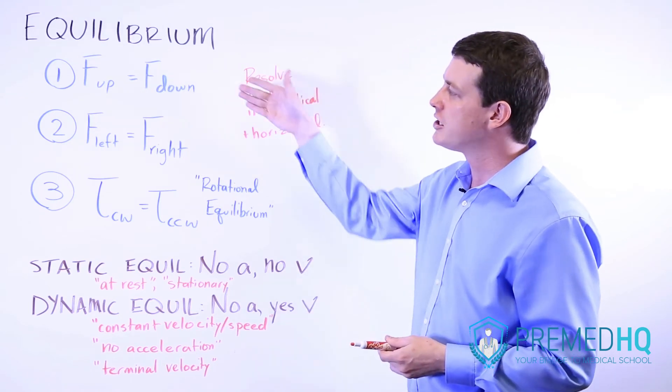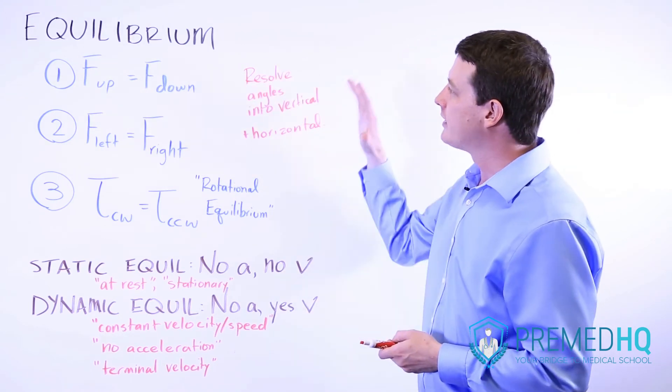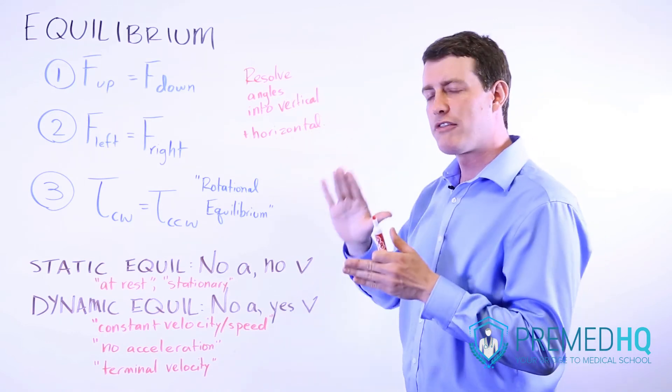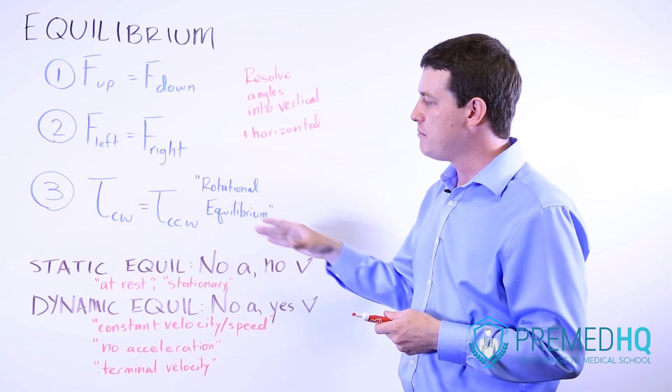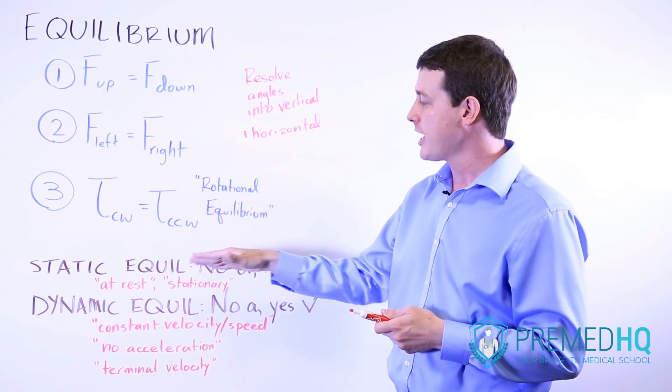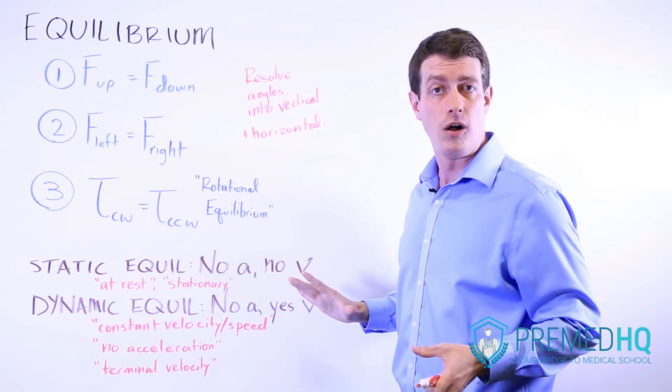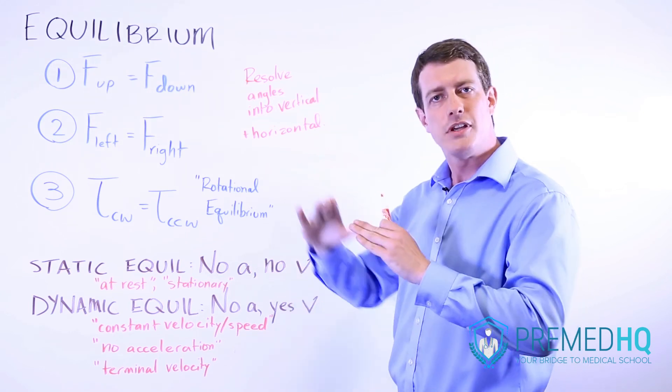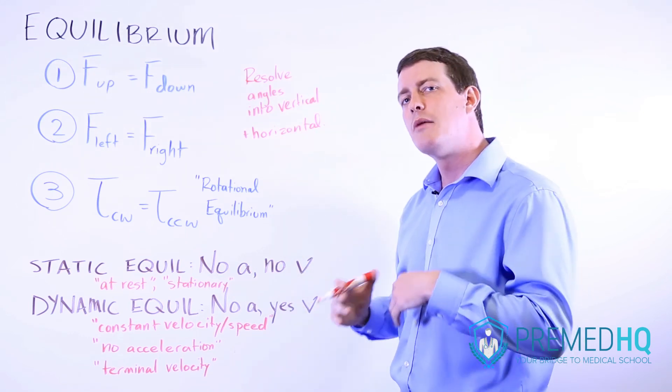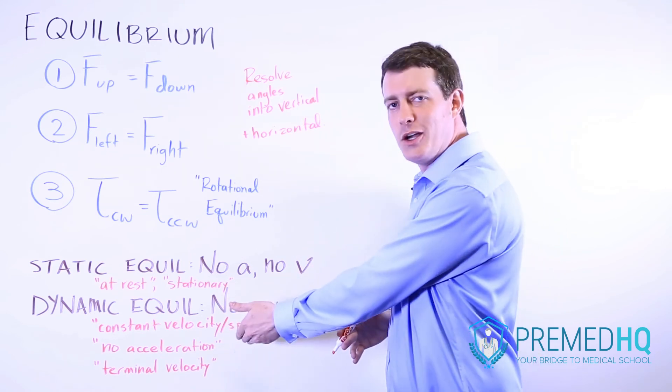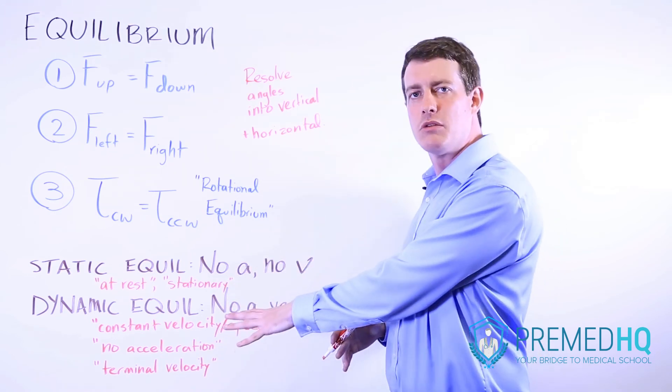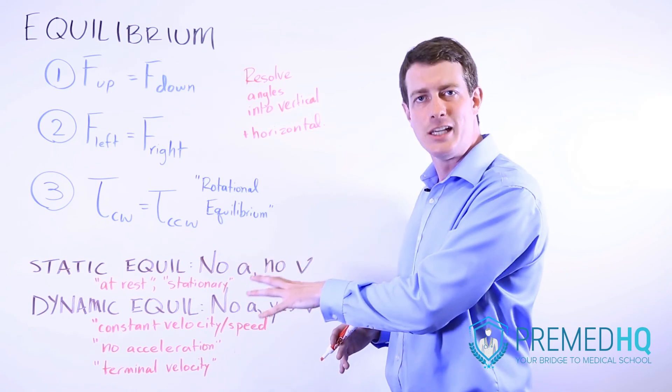So recognize the conditions for equilibrium. Recognize that if you have angles, you often will want to resolve them into a vertical and horizontal component. And be aware of the fact that equilibrium can mean that the object isn't moving at all. But it can also mean that if you have equilibrium between forces, but the object was moving initially, it can have a velocity yet no acceleration. That is still in equilibrium and the net forces will still equal zero.